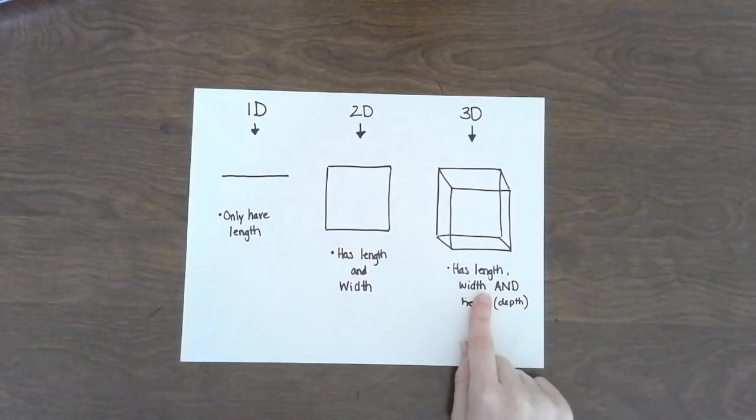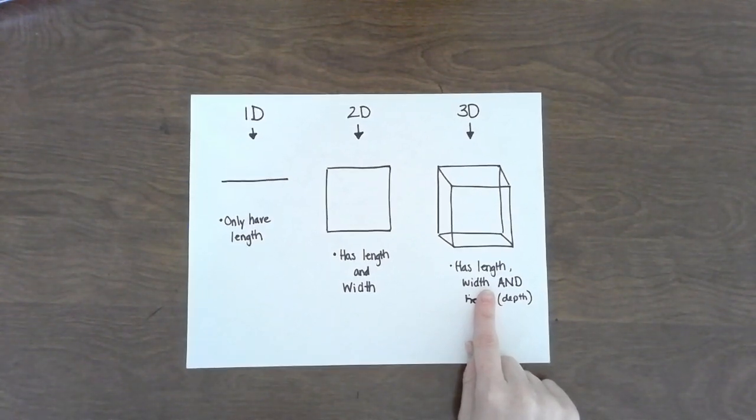Something that is 3D, like this cube, has length, width, and height or depth. Examples of something that would be 3D would be a cylinder, a cone, a cube, a sphere, and the pyramid.